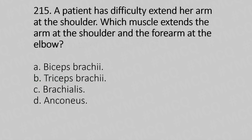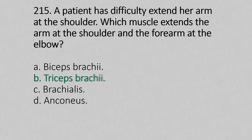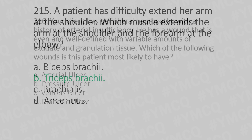Question 215: A patient has difficulty extending her arm at the shoulder. Which muscle extends the arm at the shoulder and the forearm at the elbow? Option A: Biceps brachii. Option B: Triceps brachii. Option C: Brachialis. Option D: Anconeus. The answer is Option B: Triceps brachii.